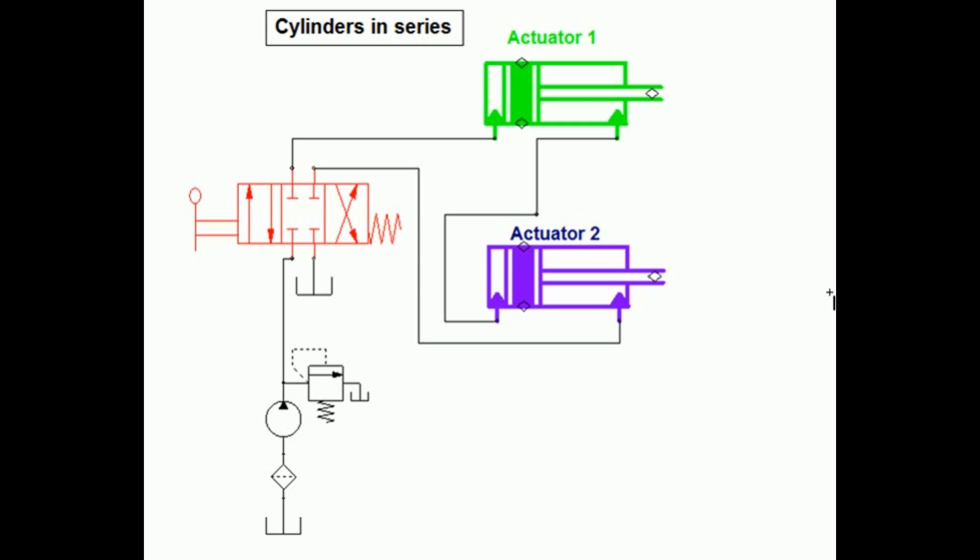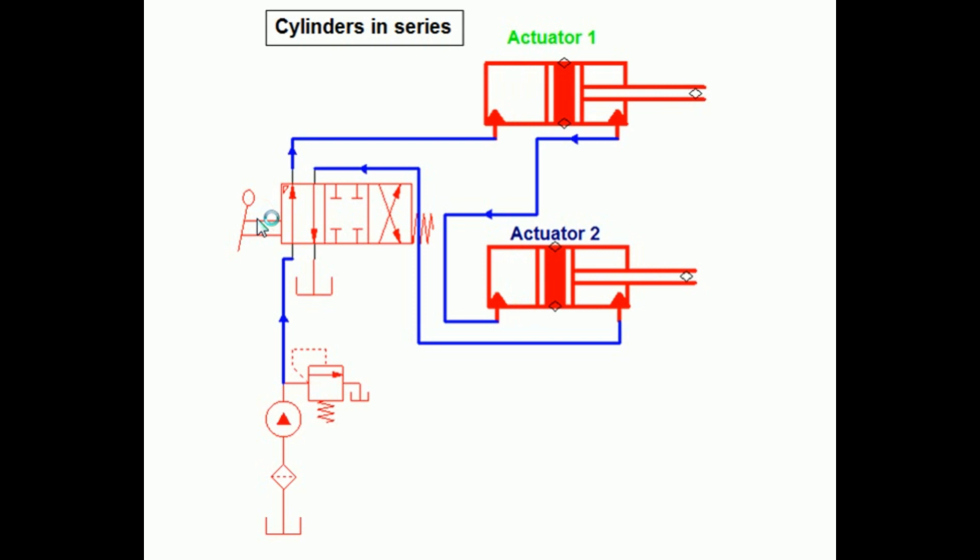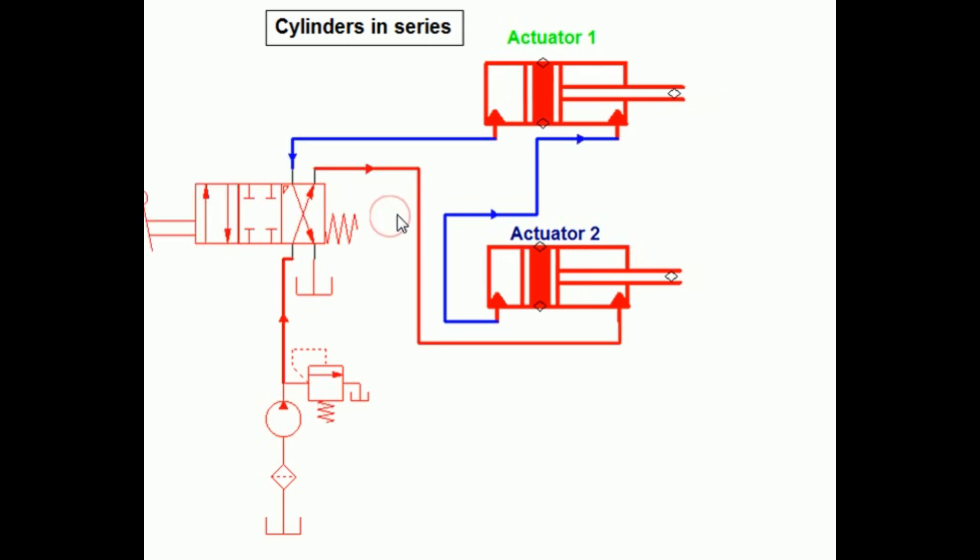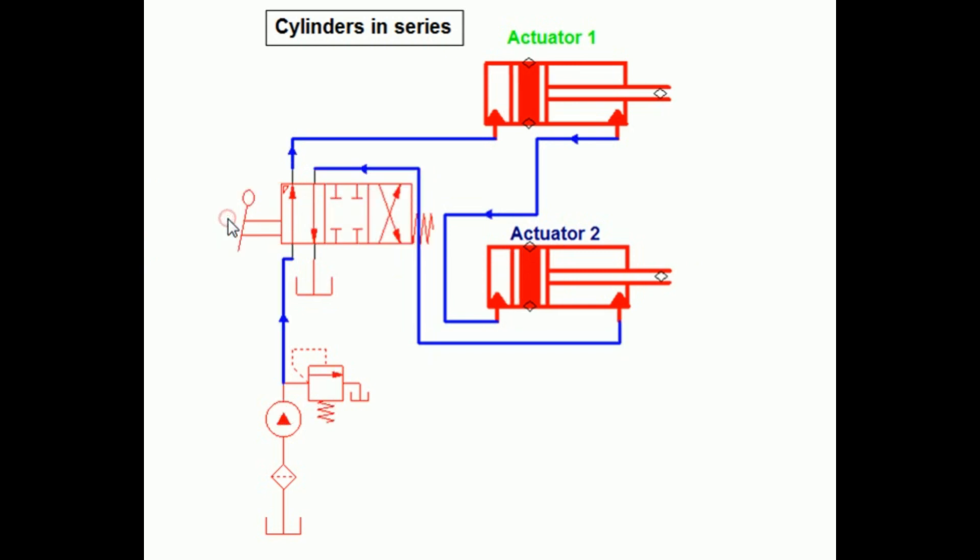Fluid from the pump is delivered to the blank end of cylinder 1. As cylinder 1 extends, fluid from its rod end is delivered to the blank end of cylinder 2, causing the extension of cylinder 2. As cylinder 2 extends, fluid from its rod end reaches the tank.